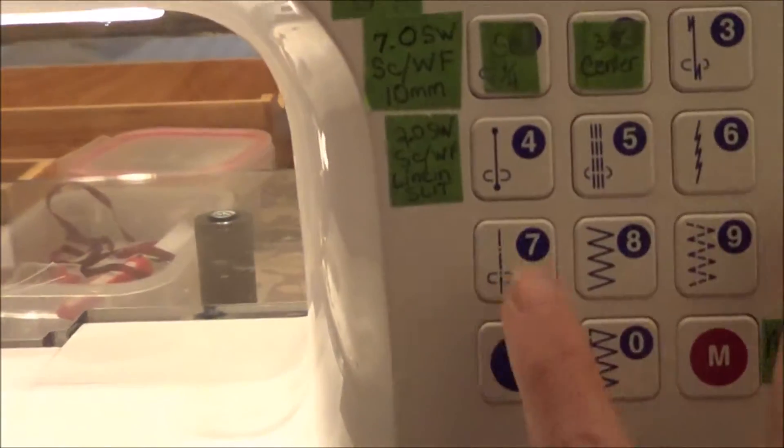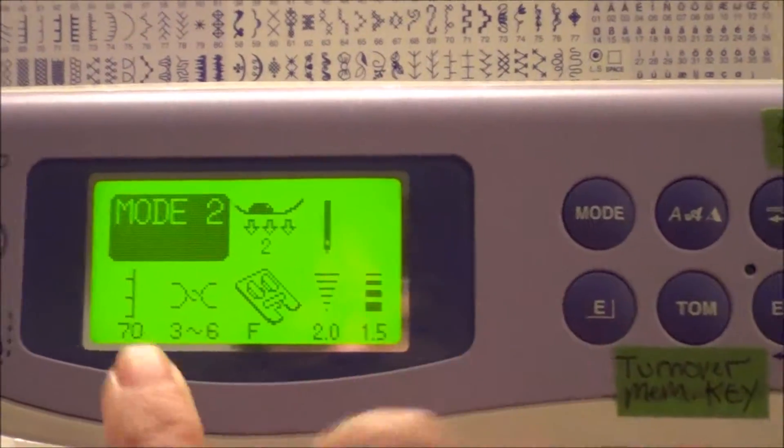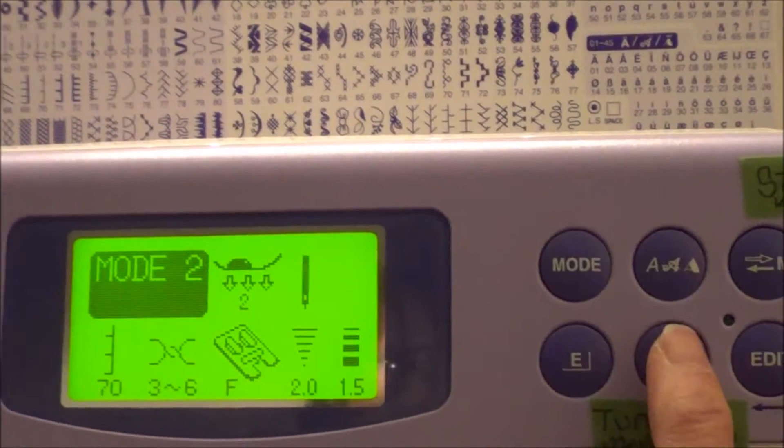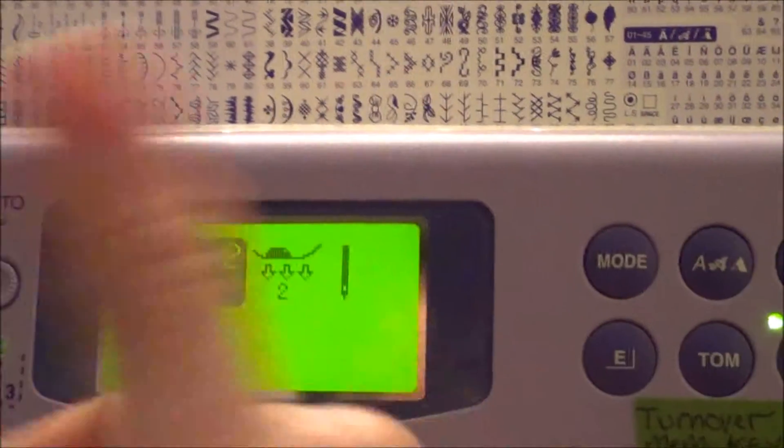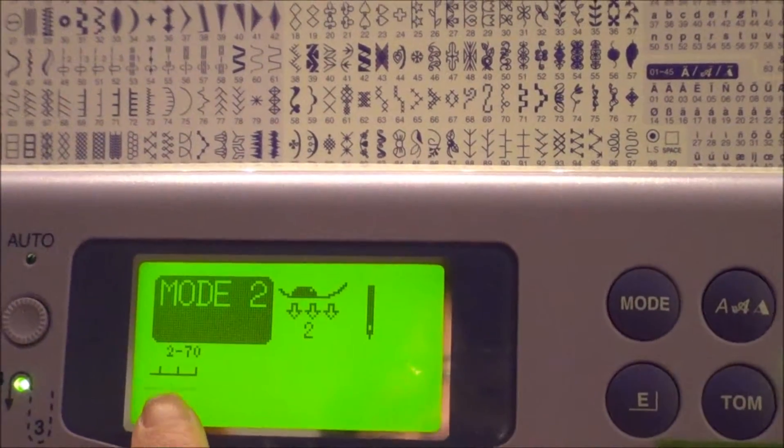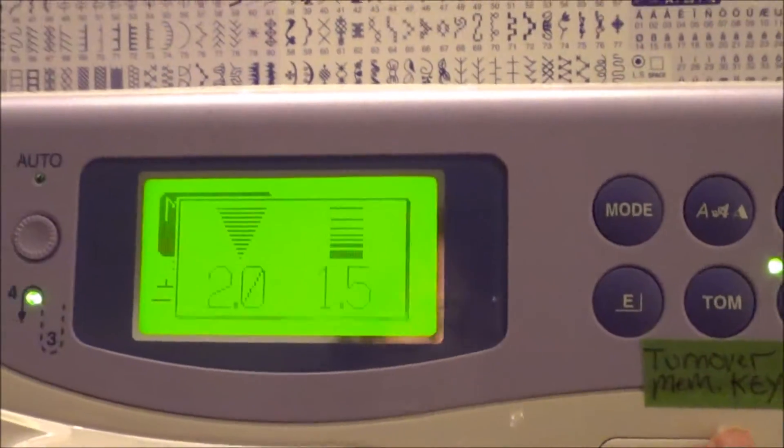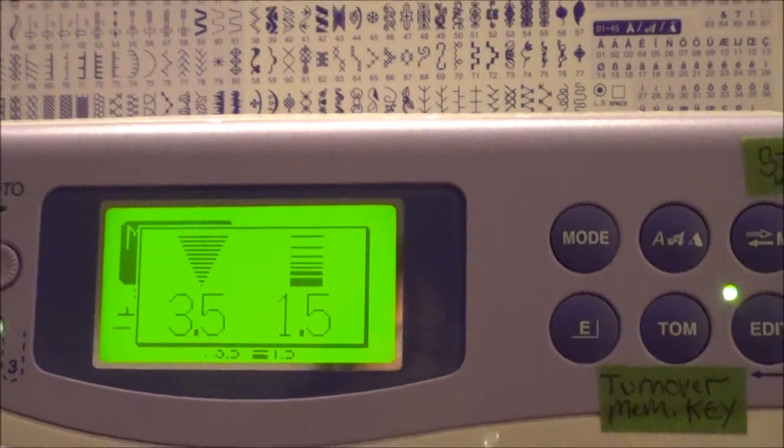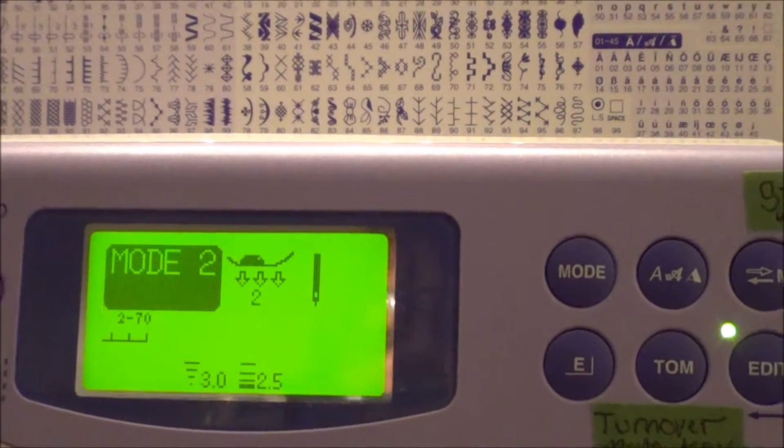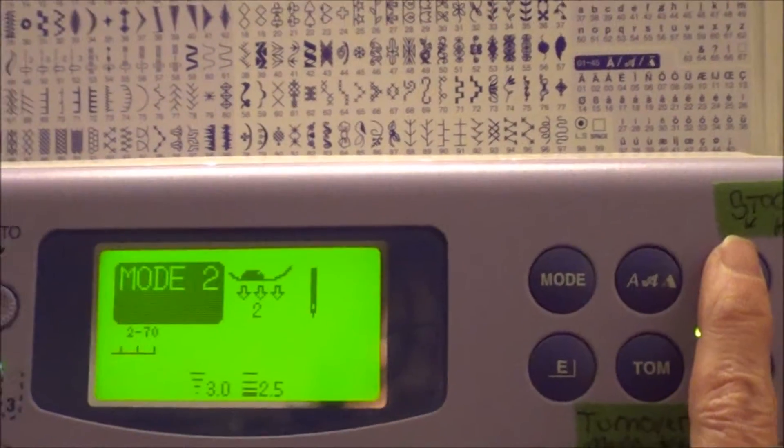So we're in mode two. We're going to call up 70. Okay, so we're in 70, but we're in the wrong one and we want to program that. So we're going to go TOM, turn over memory and it turned it over, but the two is blinking here. We want to edit to get that. So now it's the one. So we have one stitch here blinking. We want to change our stitch width, whoops, to 3.0. We want to change our stitch length to 2.5. And now we want to save that. So we have to save it in this stock area. So we have to hit stock call key.